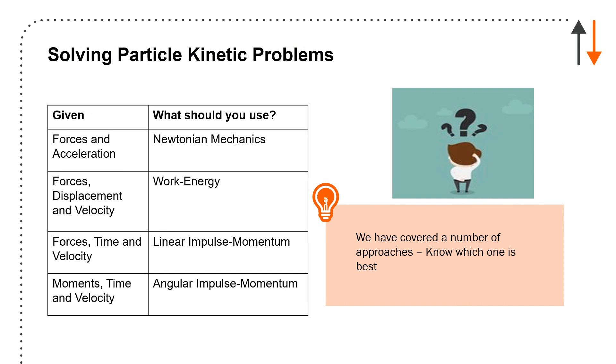This is actually kind of something I should do more often, which is how do you solve particle kinetic problems. You're given a whole bunch of different approaches. We've talked about Newton's second law. There's a separate video on angular momentum, linear momentum, and work energy. But if you have forces and accelerations, it's a Newtonian mechanics problem, second law. Forces, displacement, and velocity, you have work energy. Forces, time, and velocity, you have linear impulse momentum.